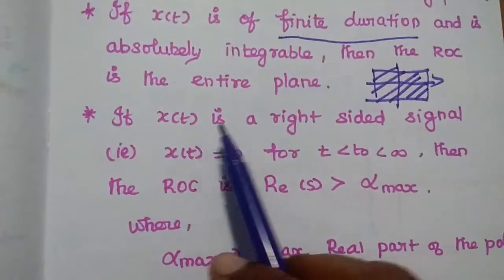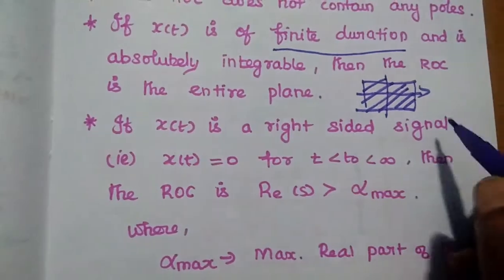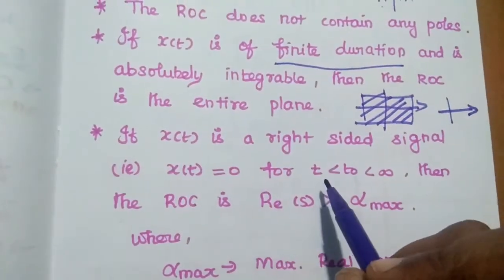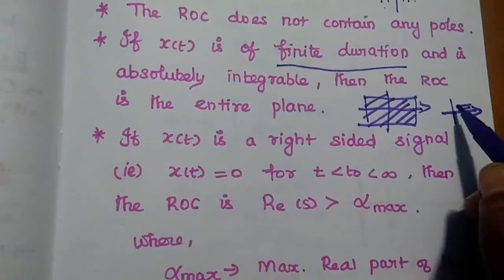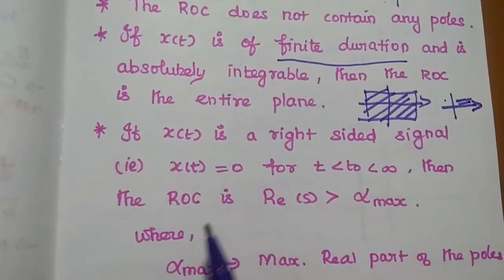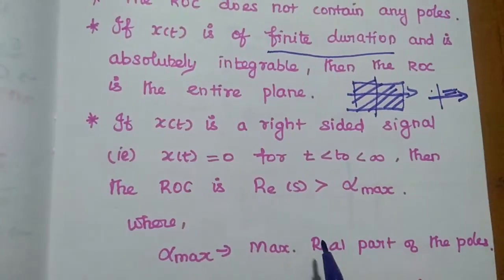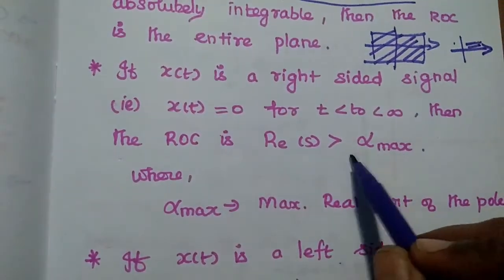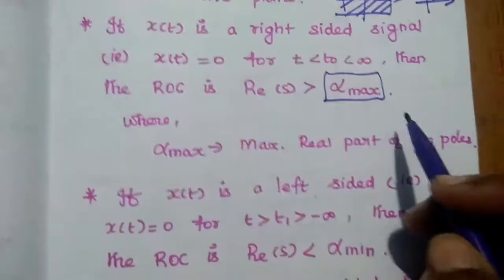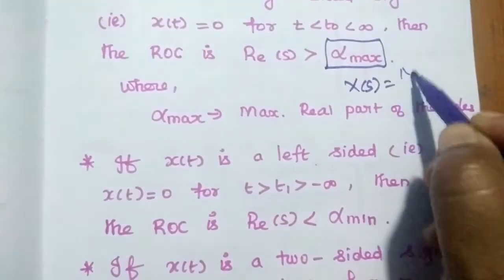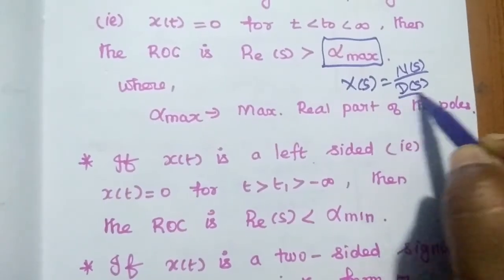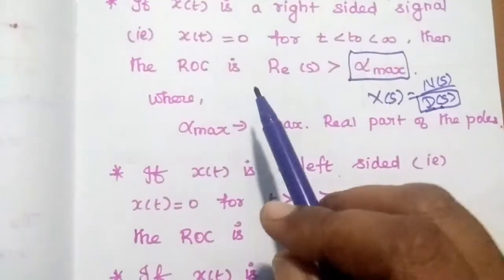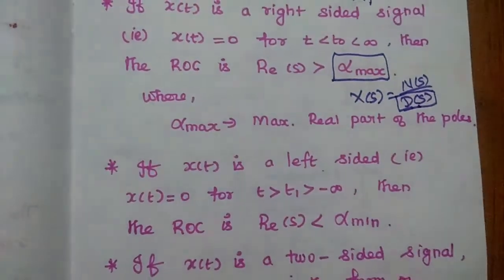The next property is: if X(t) is a right-sided signal — that means X(t) has zero values from some point to infinity, and has values only on the right side — then in that condition the ROC is the region where the real part of S is always greater than alpha_max. This alpha_max can be obtained from the poles. Poles are the roots of the denominator polynomial of X(s), and we take the maximum pole value for the ROC.